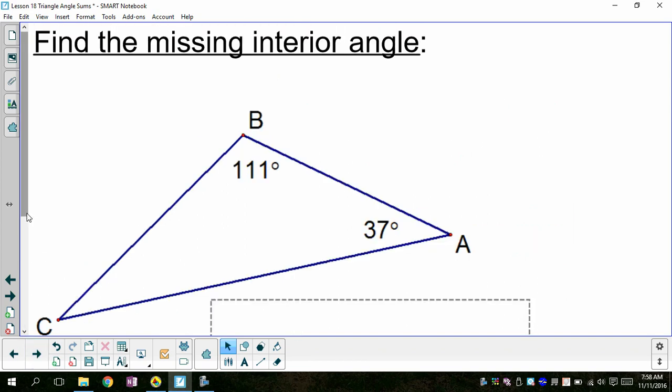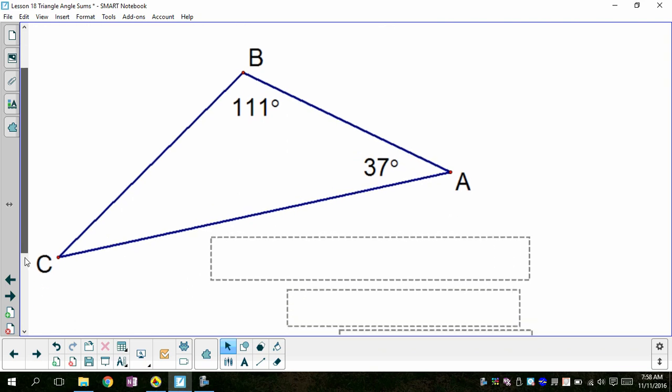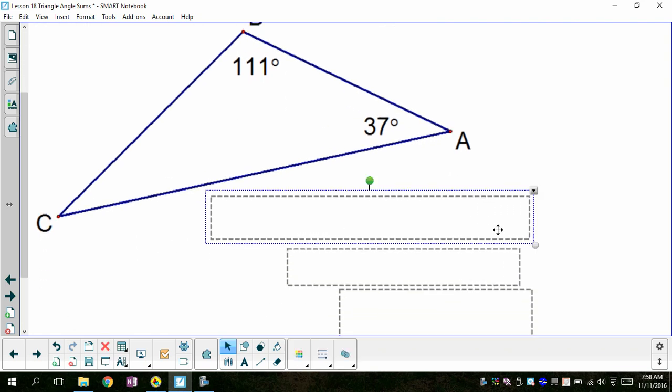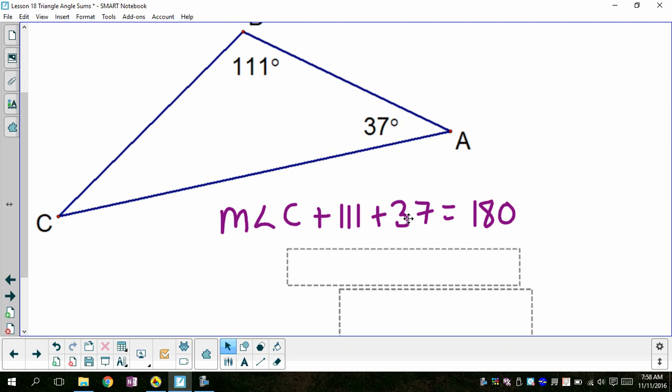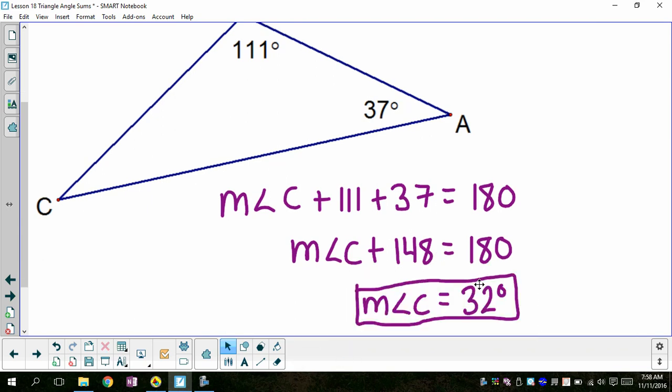So whenever I have a triangle and I know two of the angles, I can always find the third because all three of them should add to 180. So I can write the equation to find angle C in this one. Do some algebra. And I can figure out that this angle is 32 degrees. So I can always figure out the missing angle when I have two already in a triangle. And a lot of times that's helpful even in other areas of geometry.